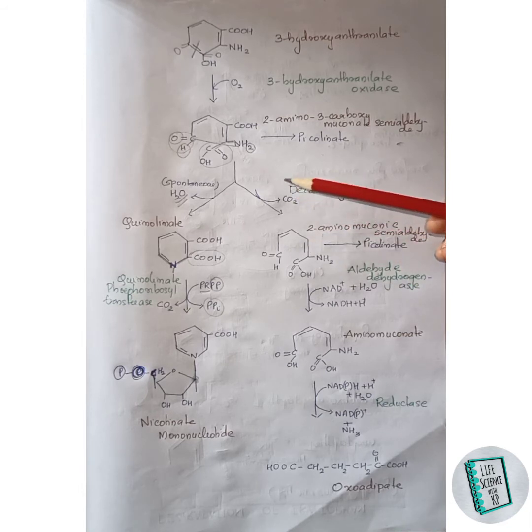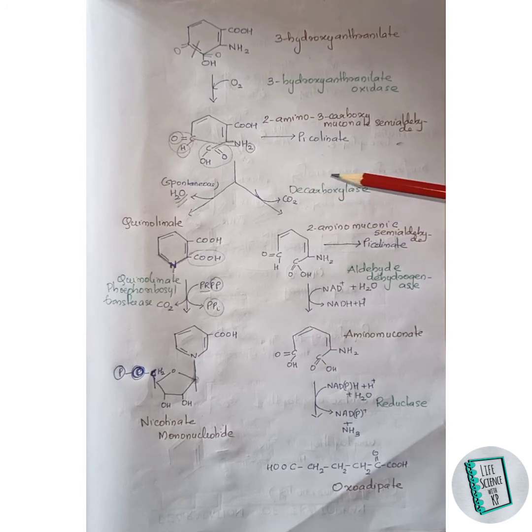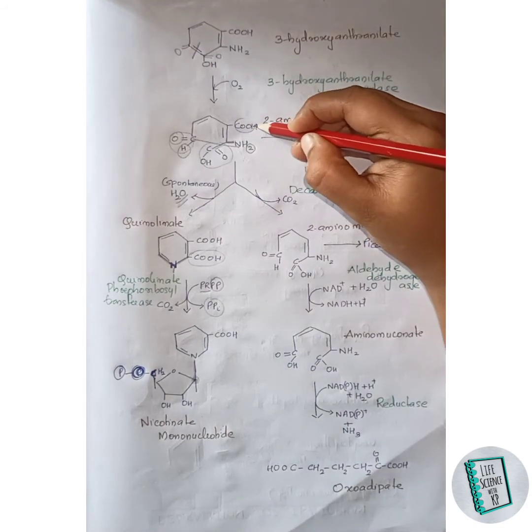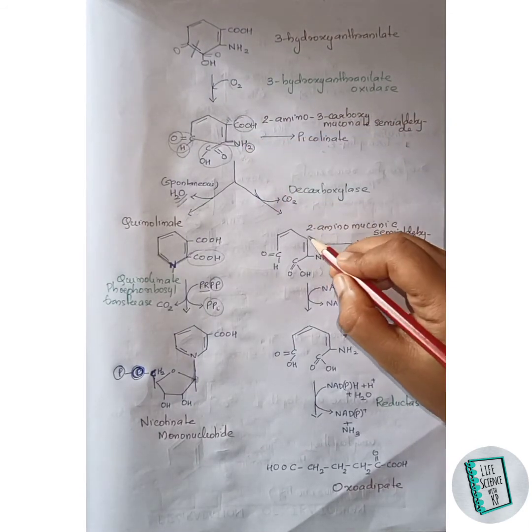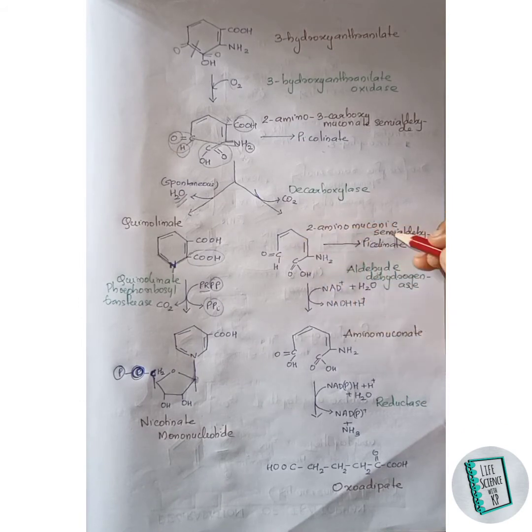Now moving to the second branch: 2-amino-3-carboxy muconate semialdehyde giving rise to acetyl-CoA. In the presence of decarboxylase enzyme, 2-aminomuconate semialdehyde is formed. CO2 gets released from the COOH group, and a hydrogen attaches to that carbon to maintain valency.